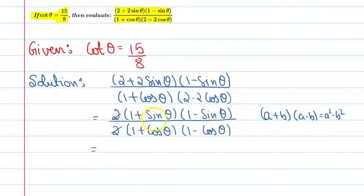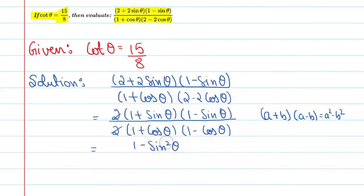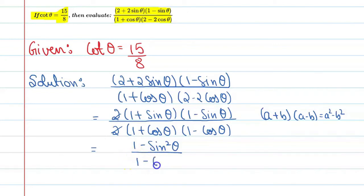Here you can say a is 1 and b is sine theta. So this is a plus b, a minus b. Again a plus b, a minus b. So now you can write it as 1 minus sine squared theta in the numerator. Similarly, here you can write 1 minus cos squared theta in the denominator.